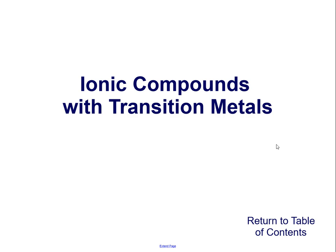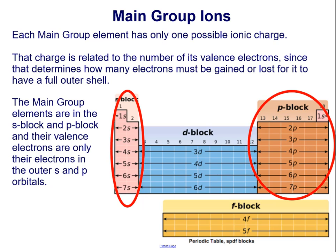Ionic compounds with transition metals. Main group ions: each main group element has only one possible ionic charge. That charge is related to the number of its valence electrons, since that determines how many electrons must be gained or lost for it to have a full outer shell. The main group elements are in the S block and the P block, and their valence electrons are only their outer electrons in the outer S and P orbitals.